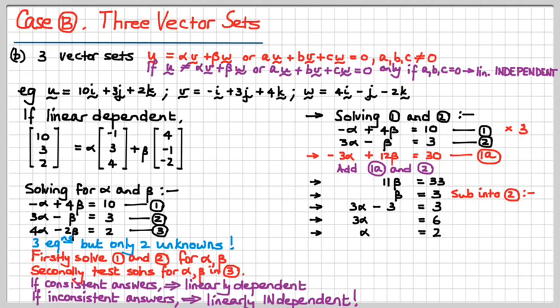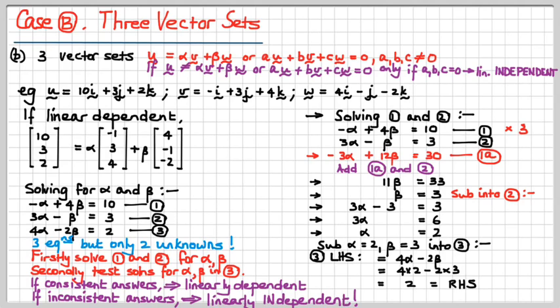Now what we've got to do is sub those two values for alpha and beta in the third equation, and if the right-hand side equals the left-hand side after we've substituted them in, then we're in business. They're linearly dependent. The third equation left-hand side comes to be four alpha minus two beta, which would be four times two minus two times three, which would be two. Now what about the right-hand side? Oh, goodness! It is equal to the right-hand side, therefore no problem. They can join the linear dependent club. They're linearly dependent.